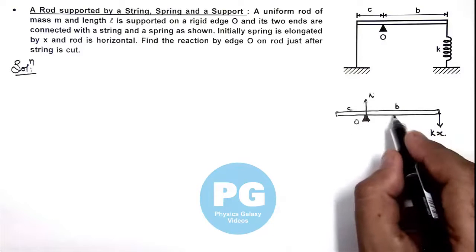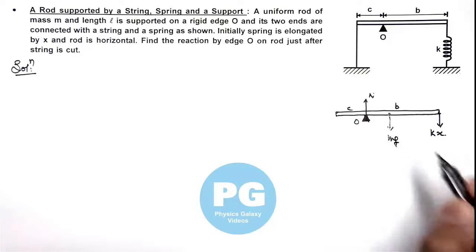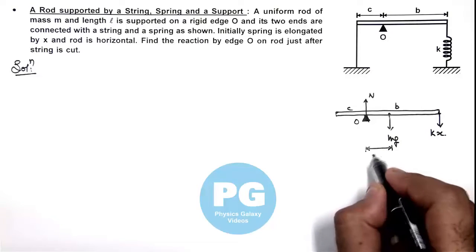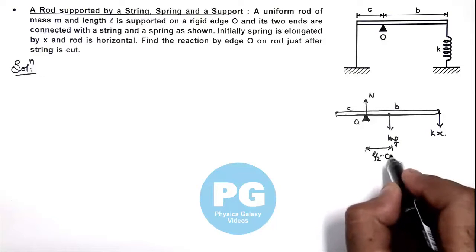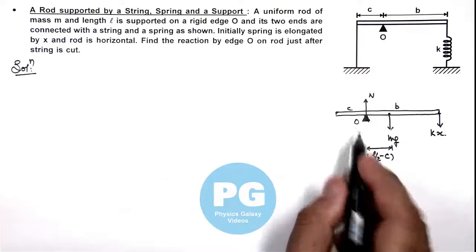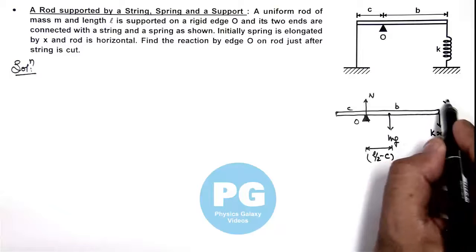At the midpoint of this rod its weight mg would also be acting, and we can calculate the distance of midpoint from O will be l by 2 minus c. Now in this situation, as soon as the string is cut, the rod will have a tendency to rotate with an angular acceleration alpha.